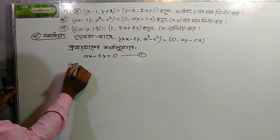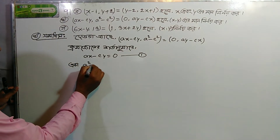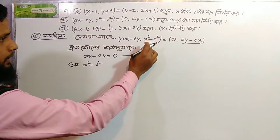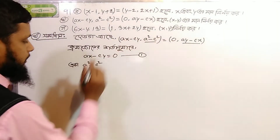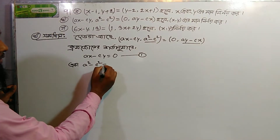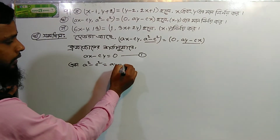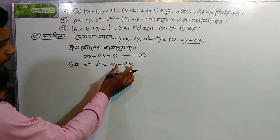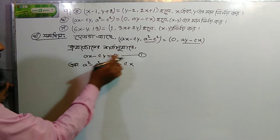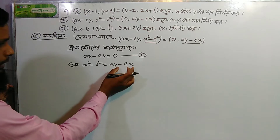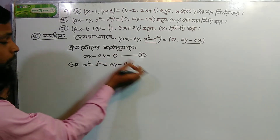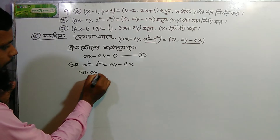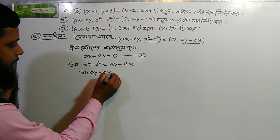A square minus c square plus c square plus a square. A square minus c square, a·y minus a·a is a square. This gives a·y minus c·x, then y equals c·x.